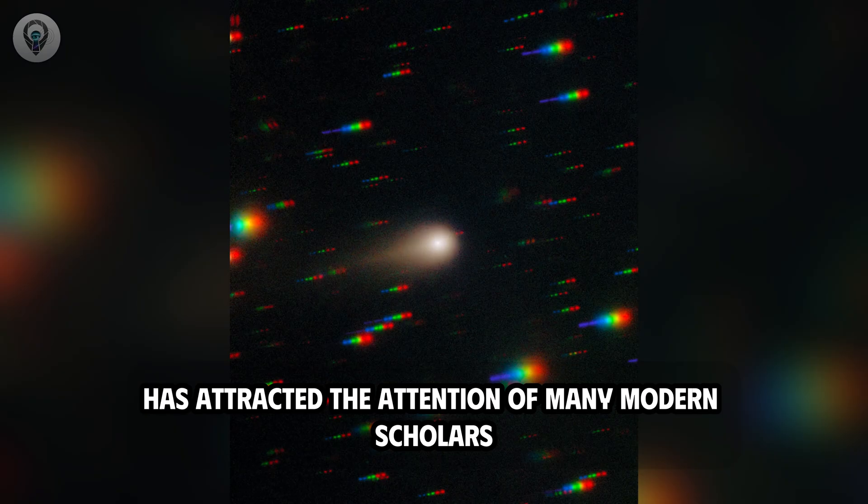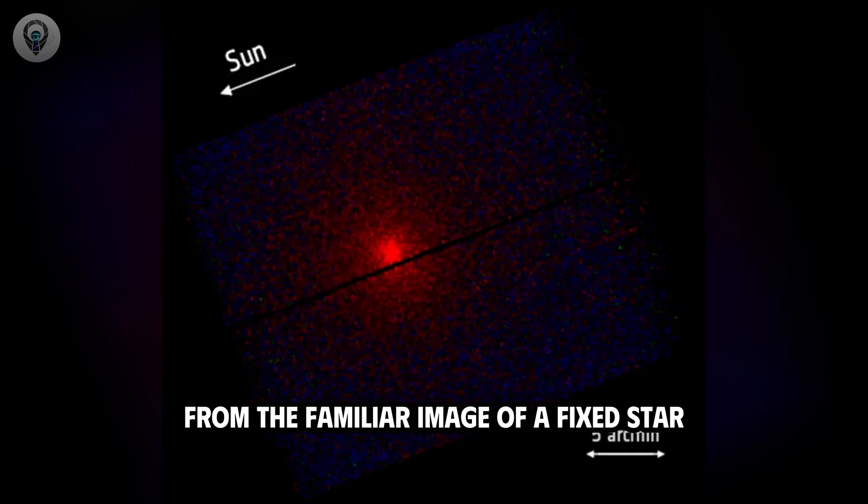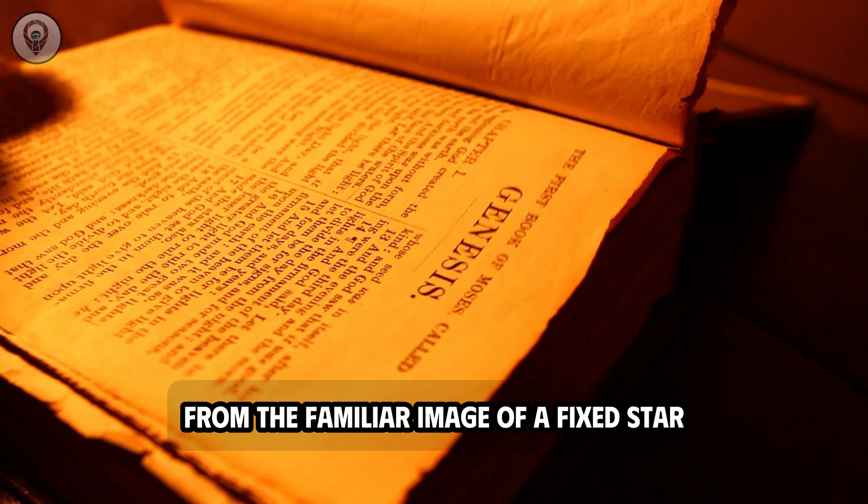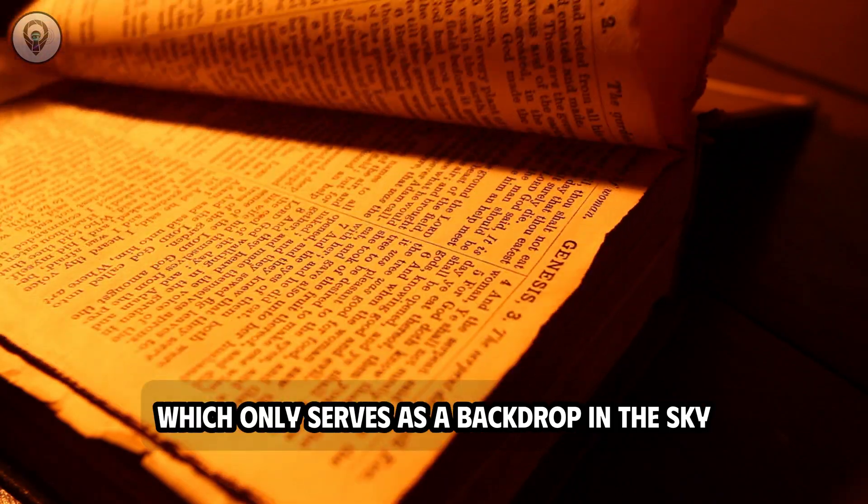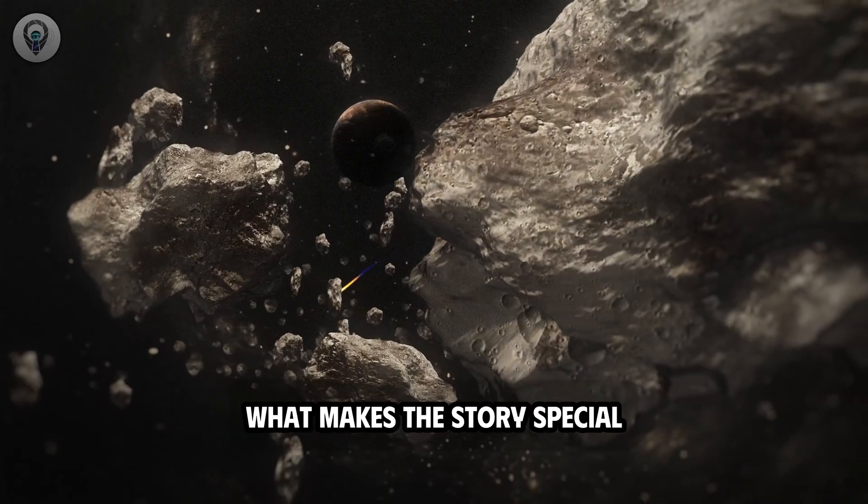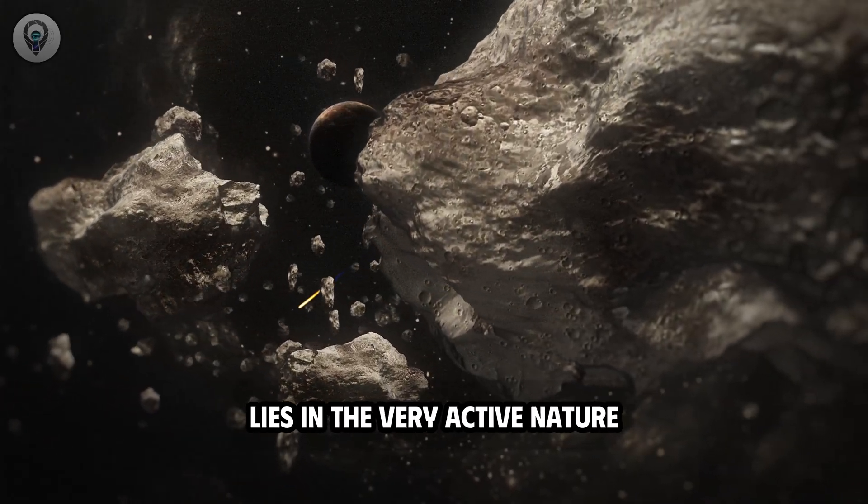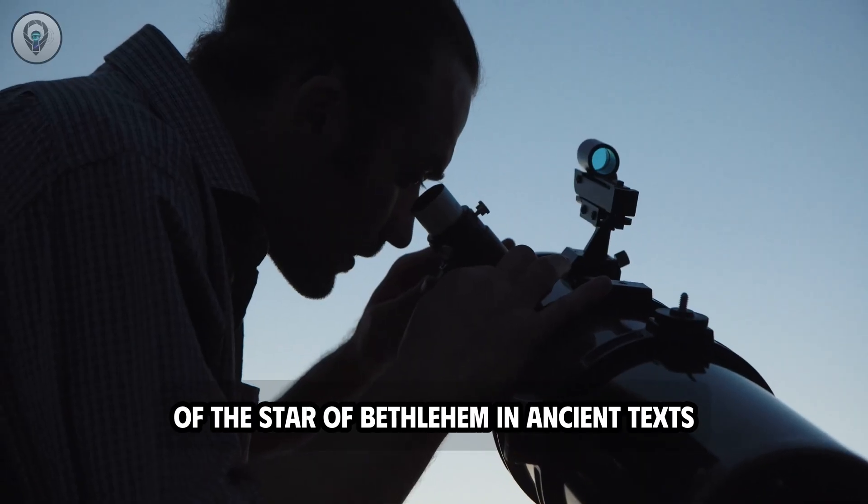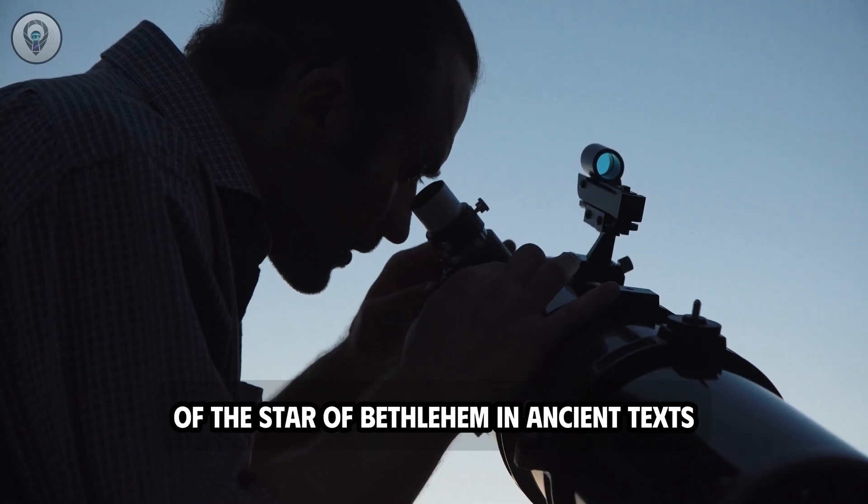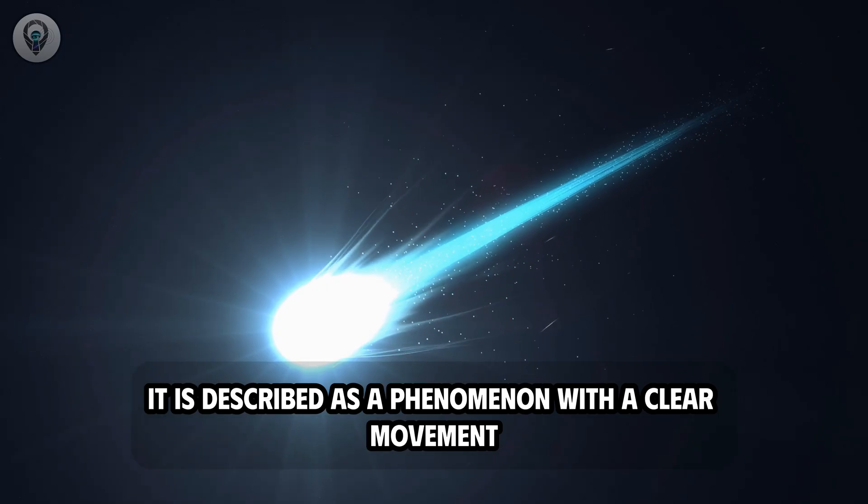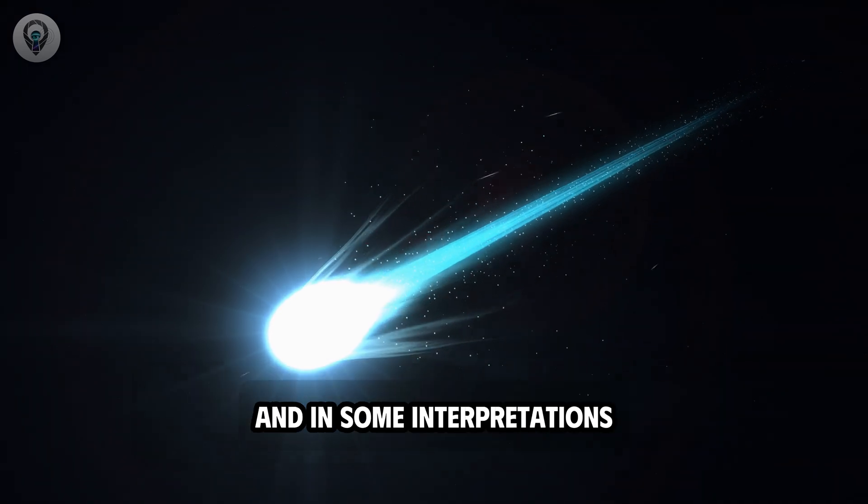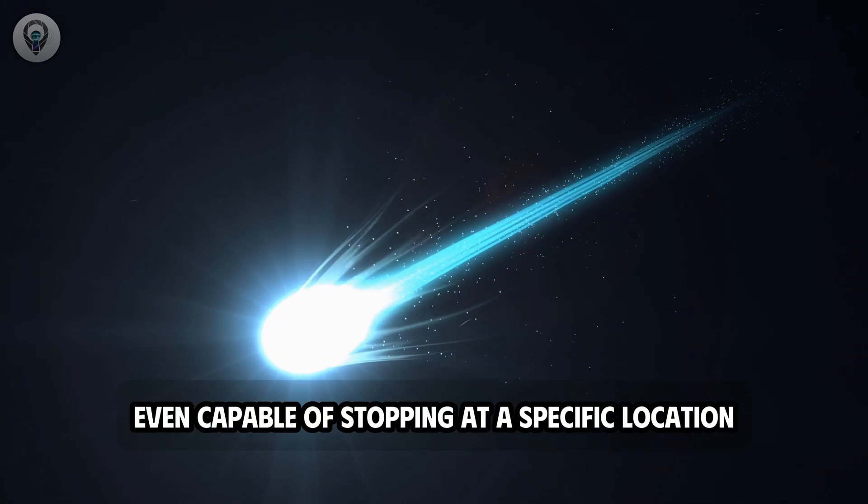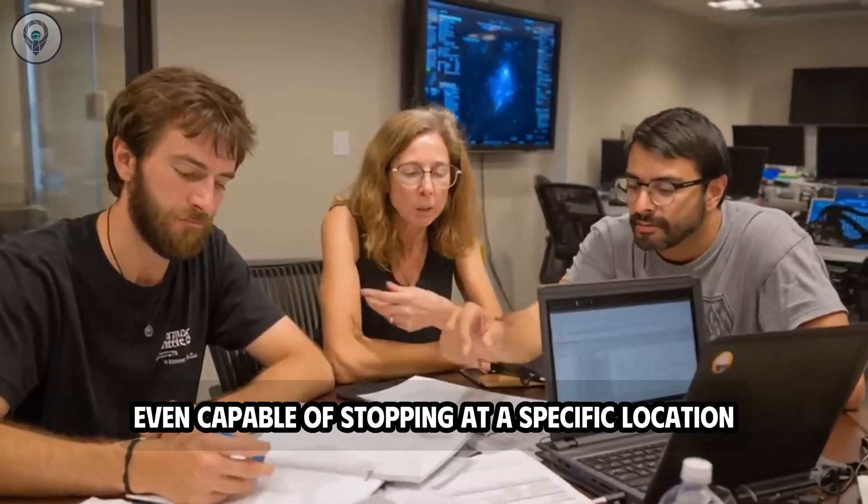According to the biblical text, this star was not just a light in the night sky, but a guiding sign, leading the wise men from the east to Bethlehem. This description has attracted the attention of many modern scholars, as it differs significantly from the familiar image of a fixed star, which only serves as a backdrop in the sky. What makes the story special lies in the very active nature of the star of Bethlehem. In ancient texts, it is described as a phenomenon with a clear movement, and in some interpretations, even capable of stopping at a specific location.